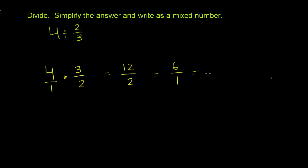6 over 1, which is the same thing as 6. Now the other thing we could have done at this stage right here is we have things in the numerator divisible by 2, we have things in the denominator divisible by 2, so let's divide both by 2.